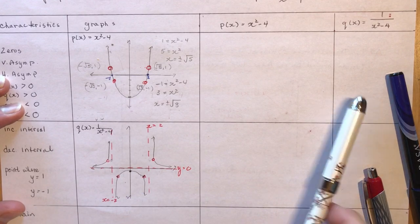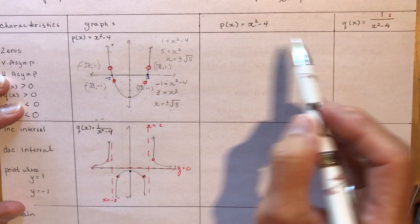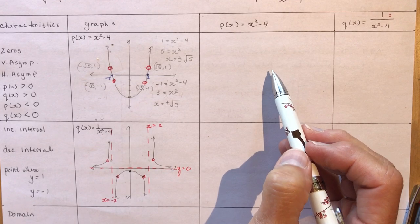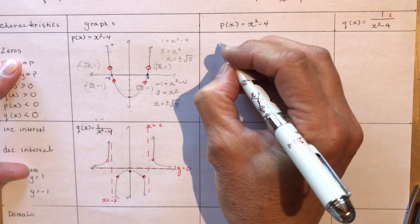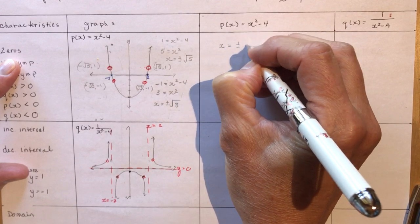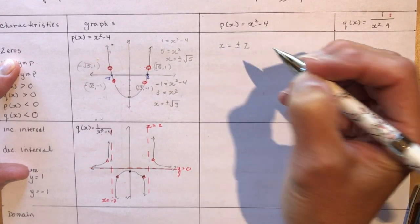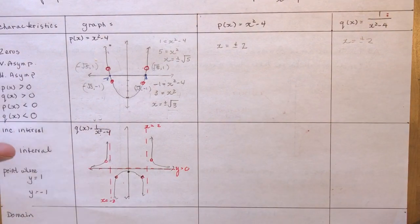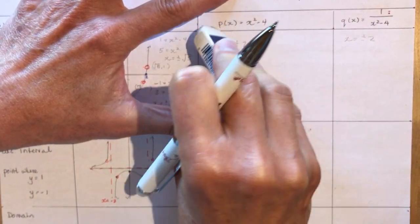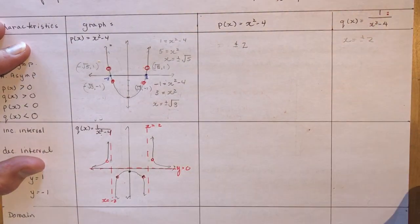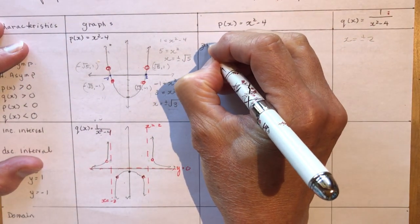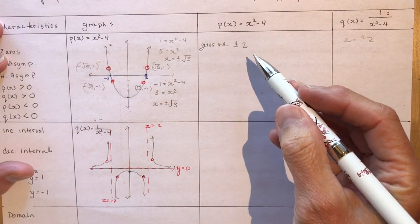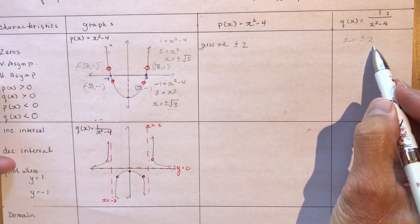Let's talk about the zeros for each of these functions. The zeros for p(x) are x equals plus and minus 2. Note you shouldn't say 'x equals' for zeros because that implies a line — so the zeros are plus and minus 2 as values. And for the reciprocal function, the vertical asymptotes are x equals plus and minus 2.